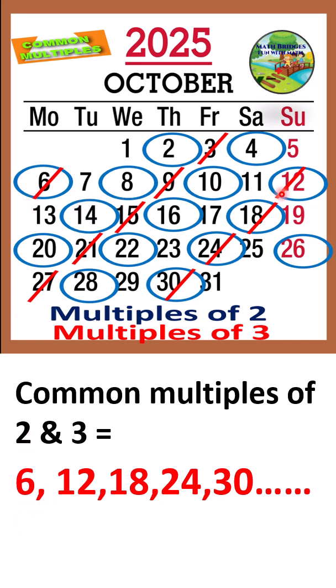Similarly, observe the other numbers. 12 is circled and crossed out, which means it is a multiple of 2 as well as 3. So the next number is 12. Like that, we will get 18, and next which is circled and crossed out is 24, and next is 30. These are the common multiples of 2 and 3.